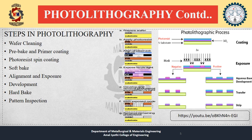To summarize photolithography, the main idea is that UV light is used as a source and photoresist as a chemical. The basic steps are: wafer cleaning, pre-bake and primer coating, photoresist spin coating, soft bake, alignment and exposure, development, hard bake, and pattern inspection. The process involves preparing a wafer, applying photoresist, aligning the photomask, exposing to UV light, developing and removing exposed photoresist, etching the exposed substrate, then removing the remaining photoresist.